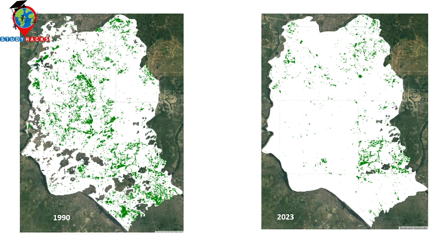You can create this type of map in different ways. If you want, you can make a land use land cover classification map and then separate only the green space or vegetation. Alternatively, you can use NDVI or EVI, find a thresholding value, and then easily identify the urban green space.